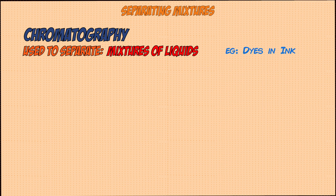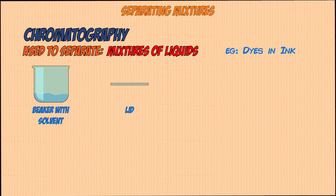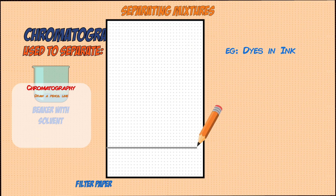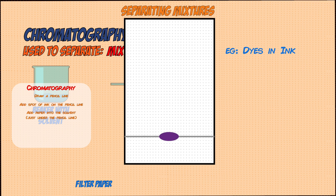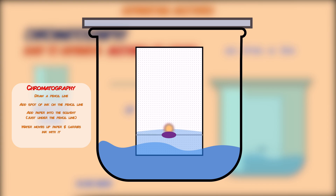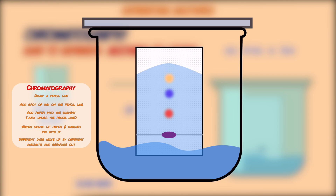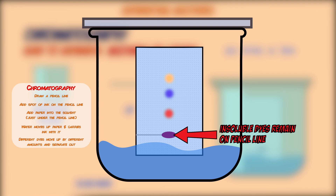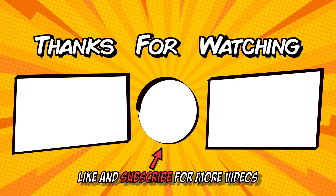The final method is paper chromatography, which is used to separate different dyes in an ink. You'll need a beaker with a solvent such as water, a lid to stop the solvent evaporating, and a piece of filter paper. Draw a pencil line on the bottom of the filter paper, add a spot of ink onto the pencil line, then place the filter paper into the beaker of solvent. The water seeps up the paper and carries the ink with it — the different dyes move up by different amounts, causing the ink to separate out. If any dyes are insoluble in the solvent, they remain on the baseline. What you end up with is called a chromatogram, showing all the different dyes in the ink.